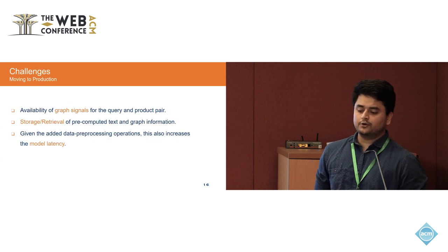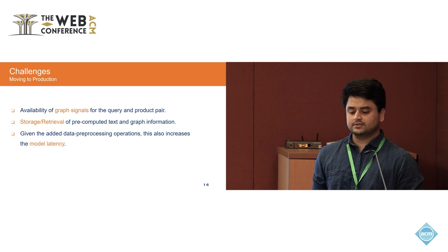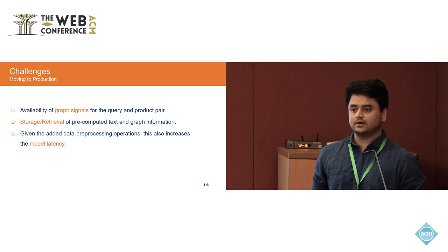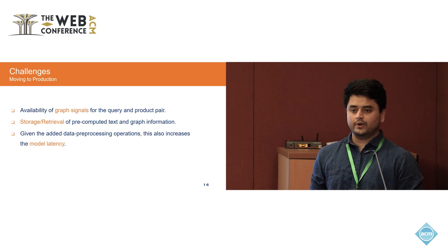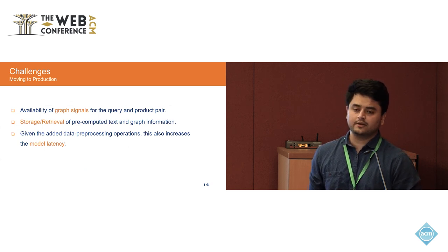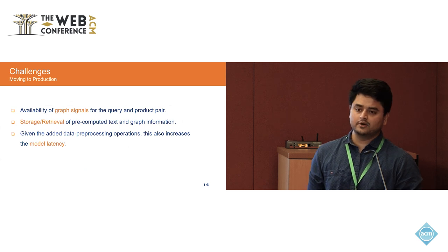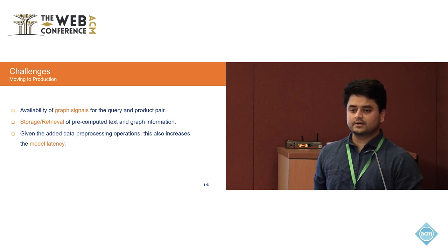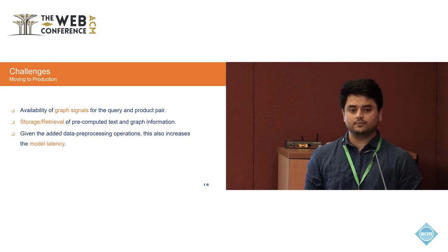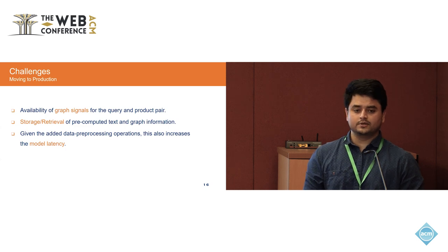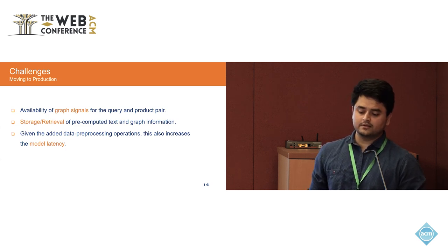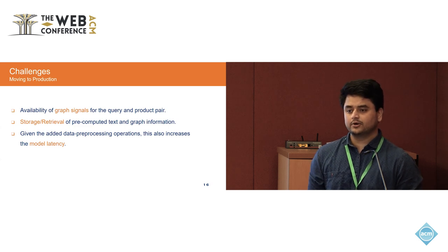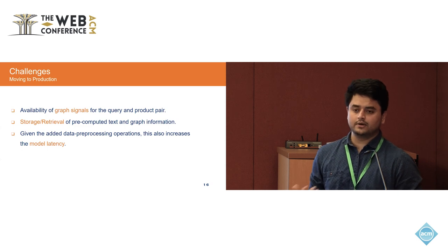Moving into production, there are some challenges. First, graph signals may not always be available — in cold start scenarios with a new query, rare query, or new product, graph signals may be missing, so this model may not work best. Second, constructing the graph itself is a significant process, roughly order N-squared. Third, the added data pre-processing steps increase model latency. These are things to keep in mind before deciding if this is a good fit for your production systems.